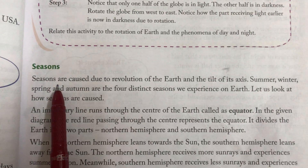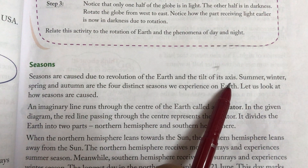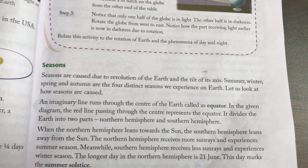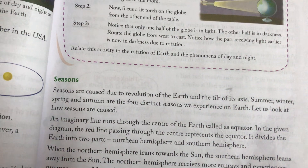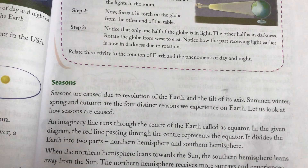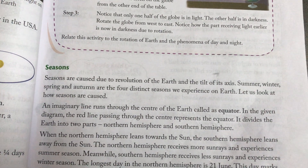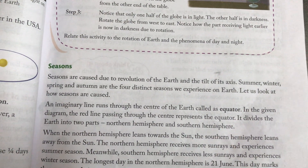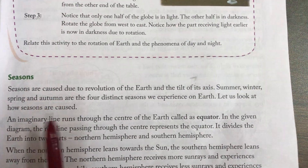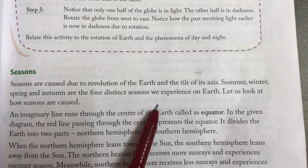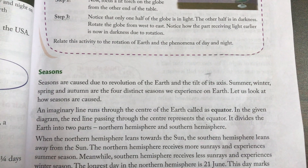What are the seasons? Seasons are caused due to the revolution of the earth and the tilt of its axis. When the earth completes one round — meaning 365 days around the sun. Summer, winter, spring, and autumn are the four distinct seasons we experience on earth.